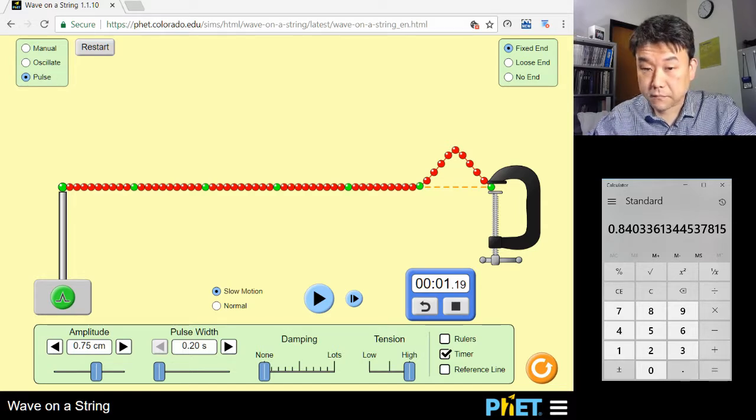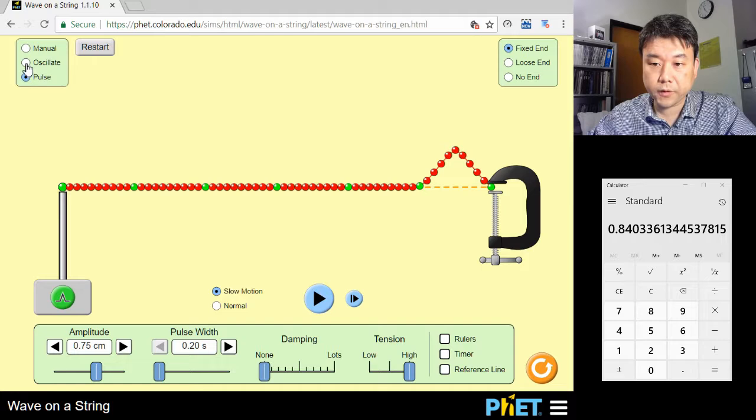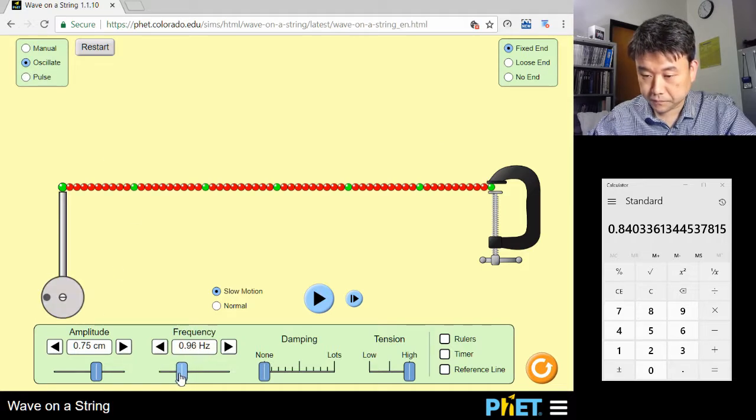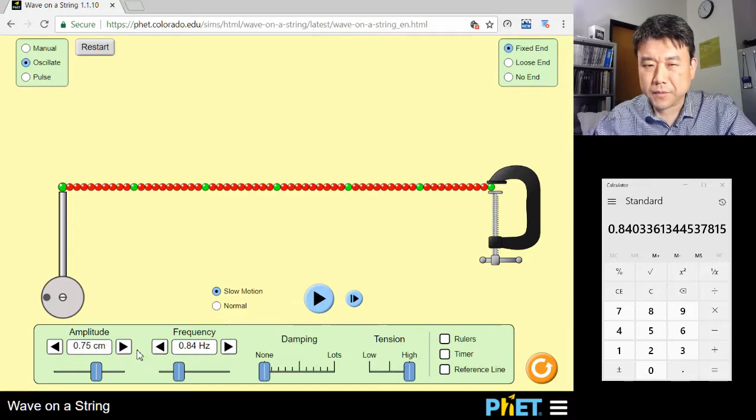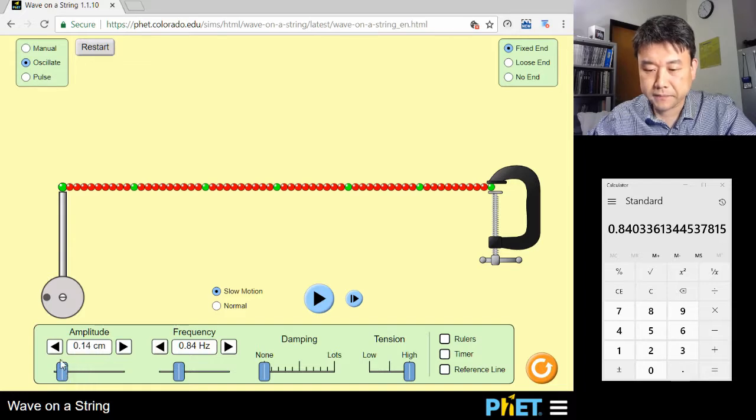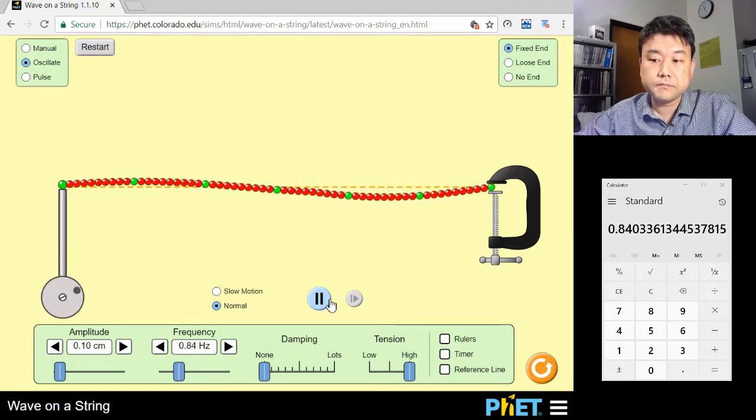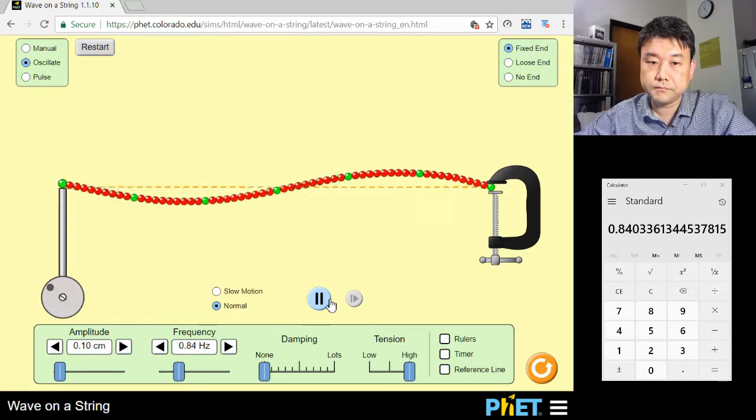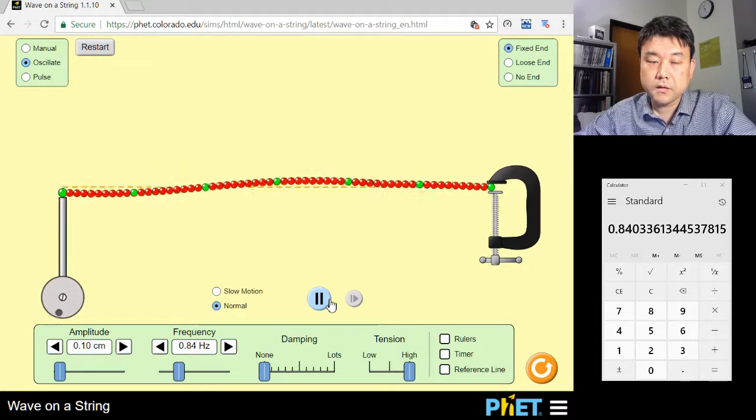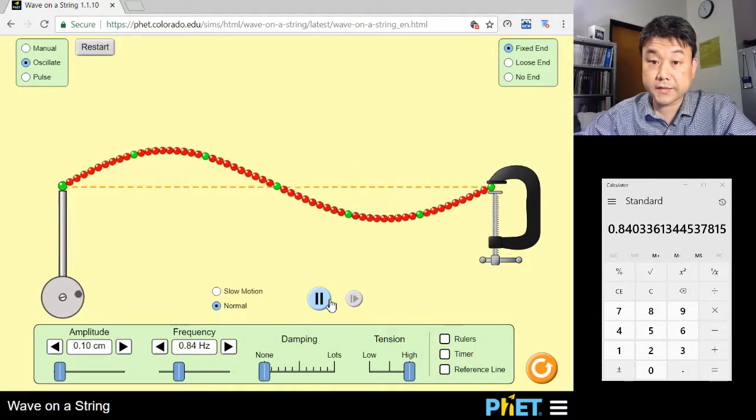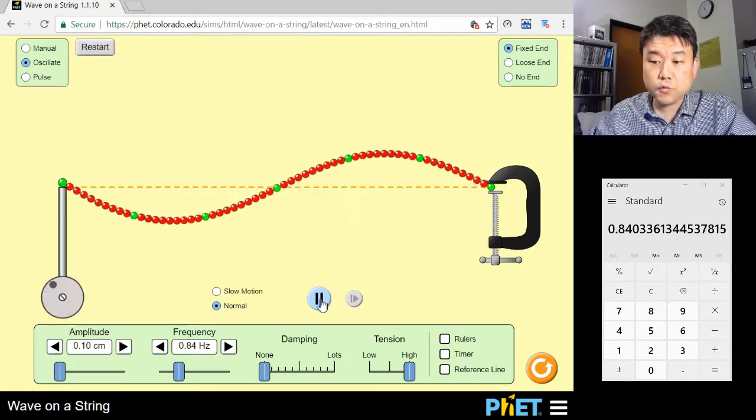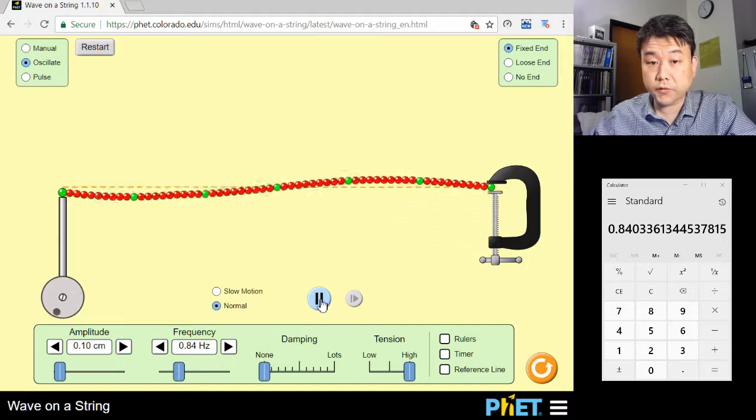All right, let's see what happens with this frequency. By the way, because I know what's going to happen, I'm going to reduce the amplitude quite a bit. You see a buildup of the standing wave. This is one of the resonance frequencies for this string.